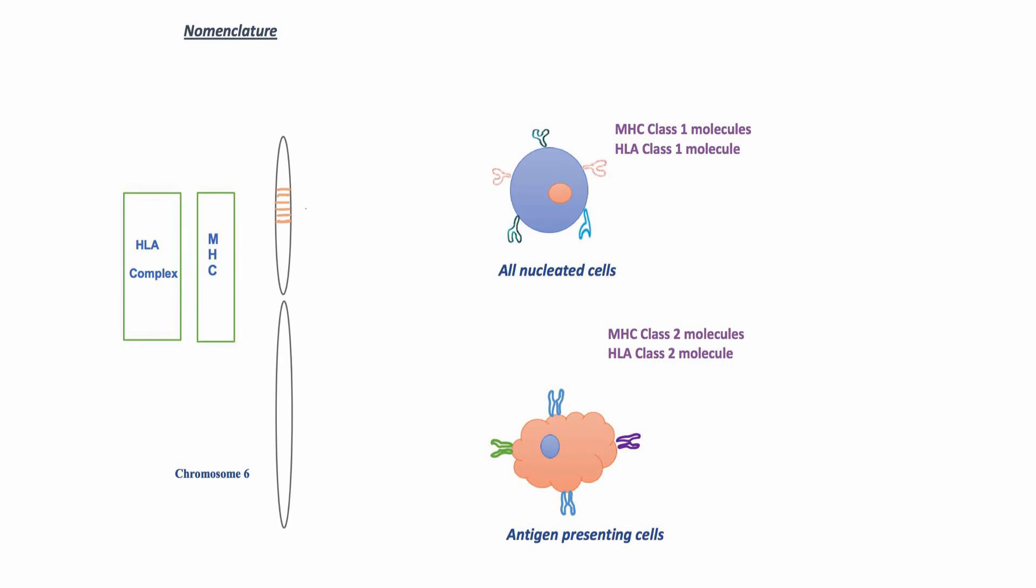So in human beings, this set of genes is called MHC or HLA complex. It's located on the short arm of chromosome 6. These genes encode proteins that make MHC class 1 and class 2 molecules. MHC or HLA class 1 molecules are present on all nucleated cells in the body.